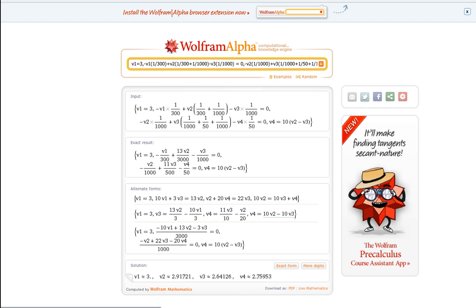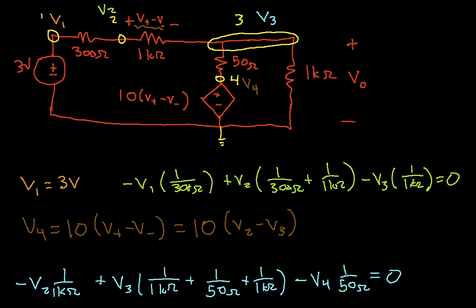And it gives us the following numbers. We have V1 is 3, which is what we would expect, because our source pegs it at 3. V2 is 2.92. V3 is 2.64. And V4 is 2.76. So let's go back to our circuit and see what this tells us. So we had V1 was 3, which we expected. V2 was 2.92 volts. V3, which is also Vout, is 2.64 volts. And V4, which is the output of our source, was 2.76 volts.